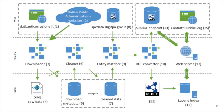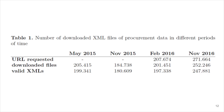I would like to provide you some results at a glance. This is the architecture of our framework in order to transform procurement data using linked data. During our experiment, we integrate information coming from more than 200,000 XML files published by 15,000 public bodies.